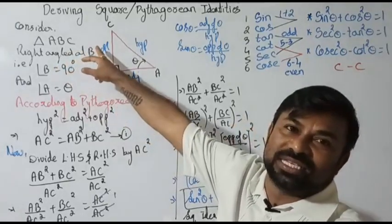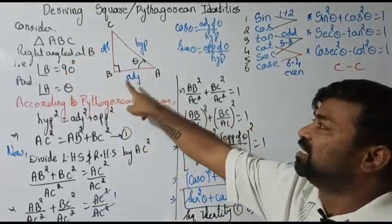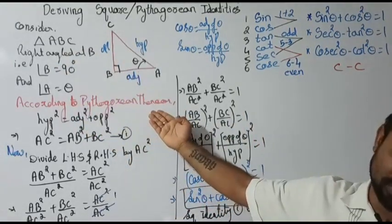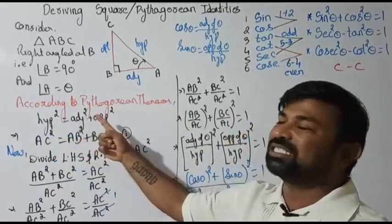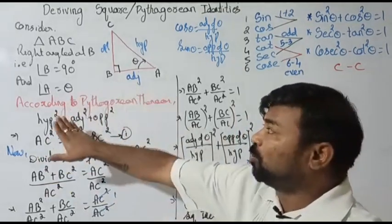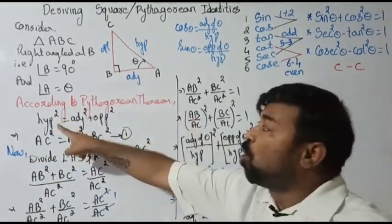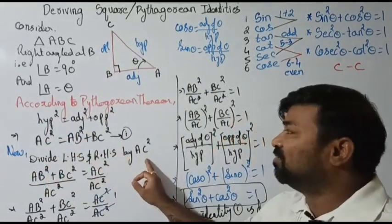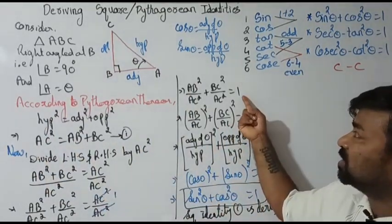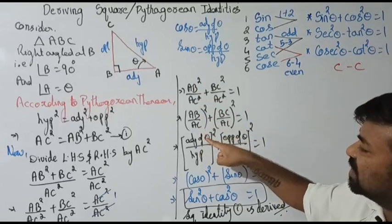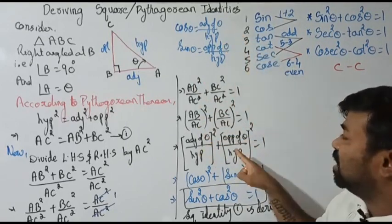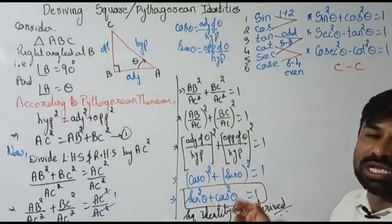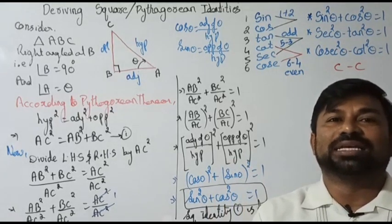To recap: we took triangle ABC right-angled at B with angle A = θ. Applying the Pythagorean theorem, dividing both sides by AC² (the hypotenuse squared), AB/AC becomes cos θ and BC/AC becomes sin θ. So cos²θ + sin²θ = 1, which is our first square identity.